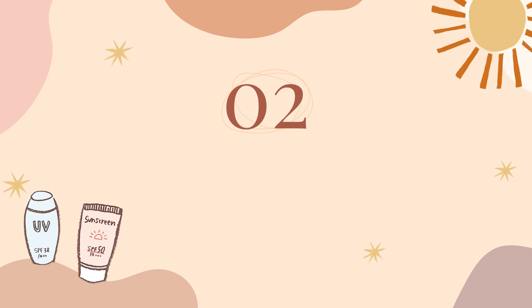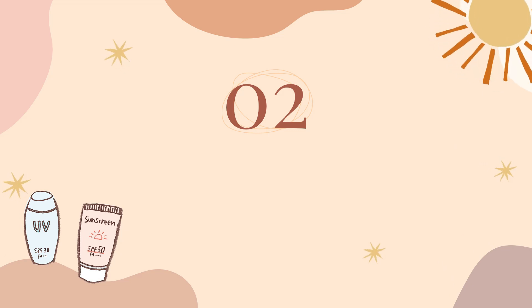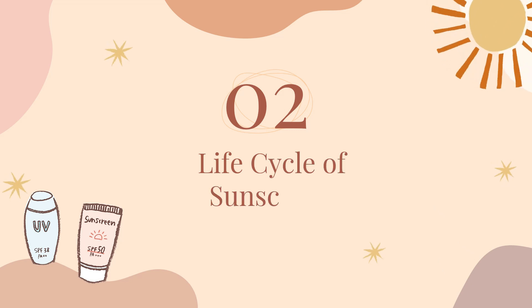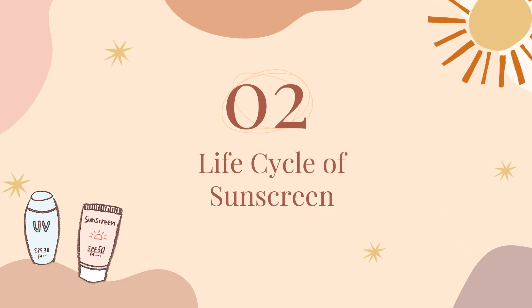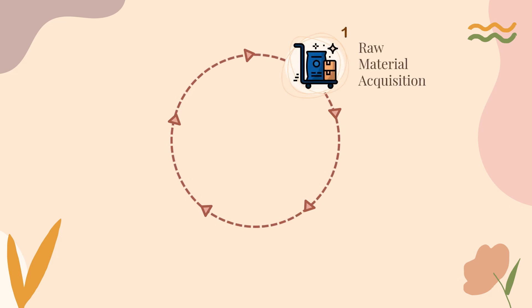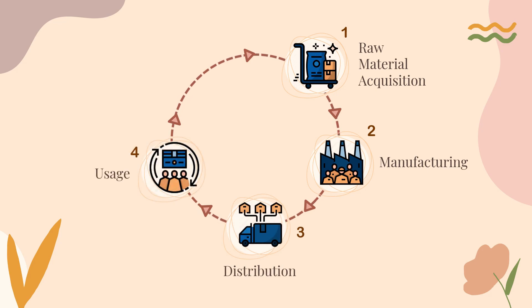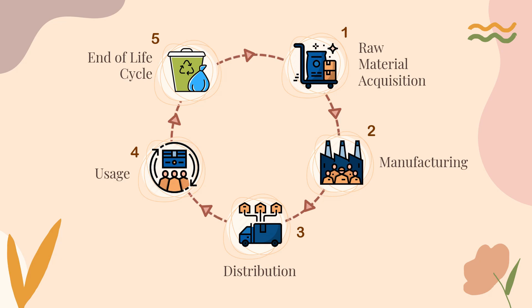Now let's move on to the main topic of this video, which is the life cycle of sunscreen. The life cycle of sunscreen consists of five stages: raw material acquisition, manufacturing, distribution, use, and lastly, the end-of-life cycle stage. Let's explore them one by one.